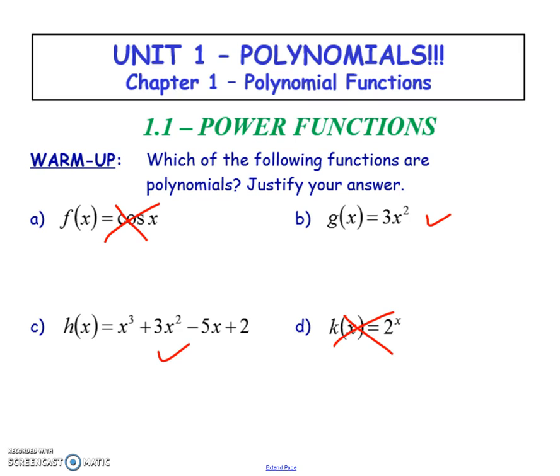Unit 1: Polynomials. Chapter 1, which is polynomial functions, getting into power functions. So first of all, this warm-up: which one of these are polynomial functions? This is not a polynomial—this is trig, and then this one is exponential. But these two guys are polynomials. This one's just a quadratic and this guy is, I think, a cubic. So looking at both of these, they are polynomials, but only one of them is technically a power function, and we'll talk about that a little bit later.